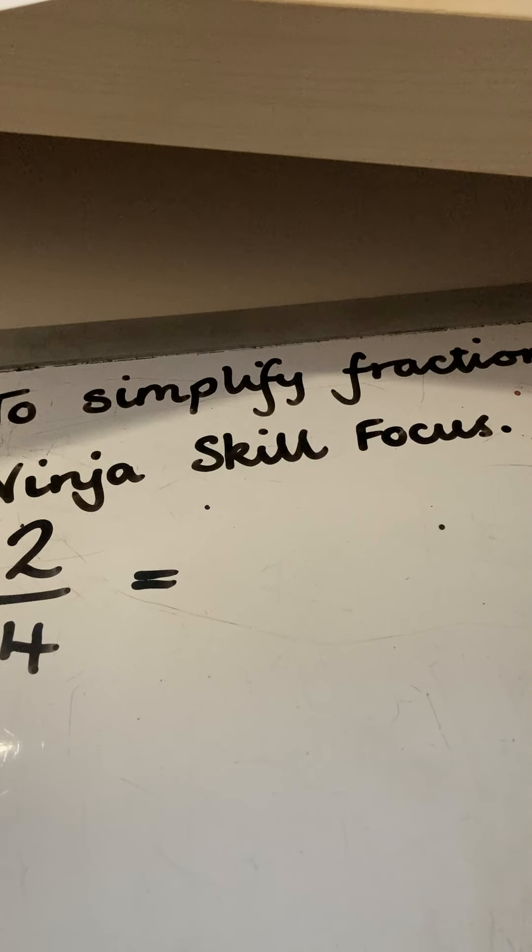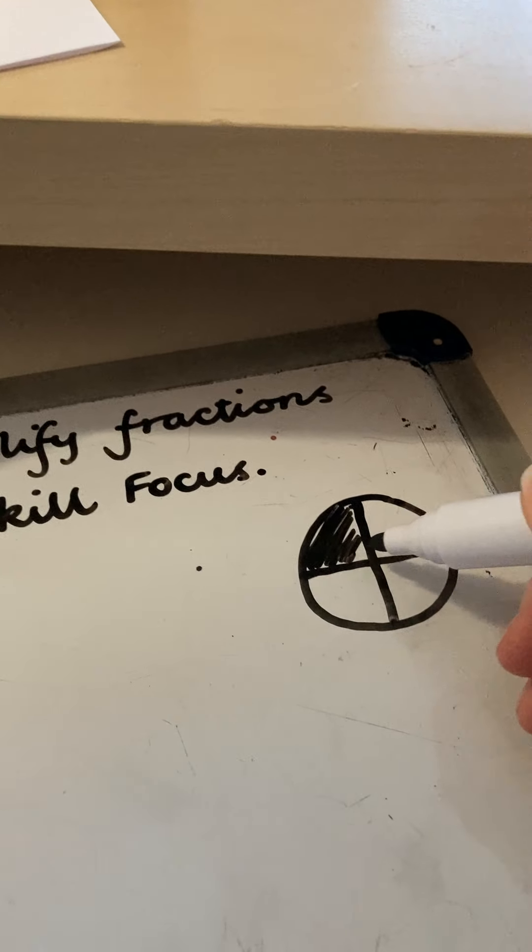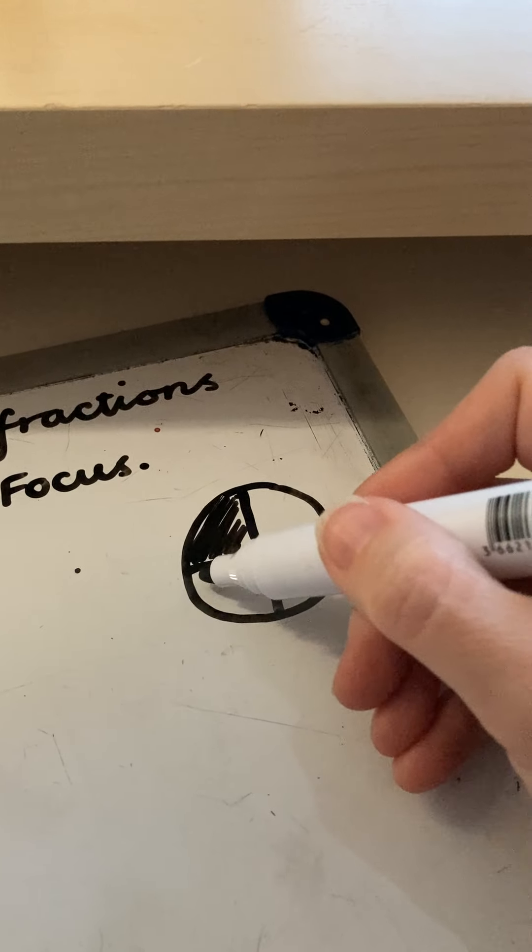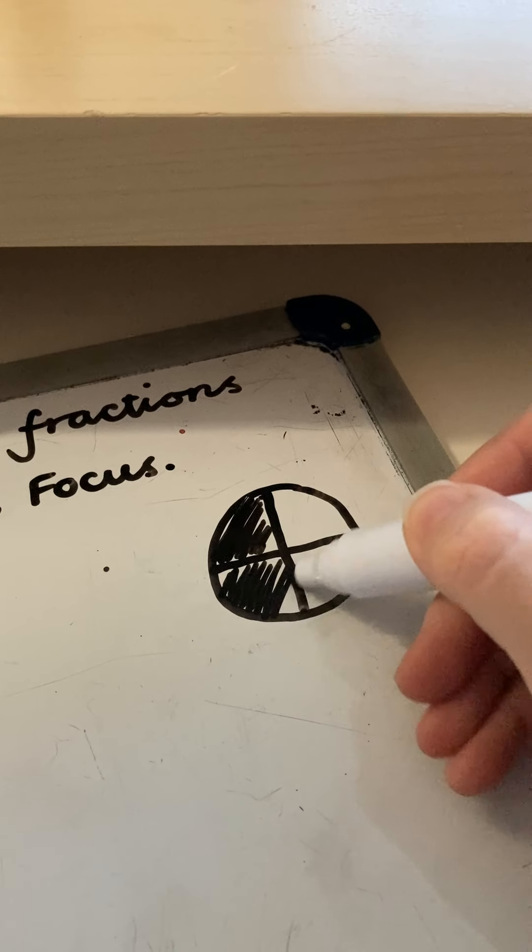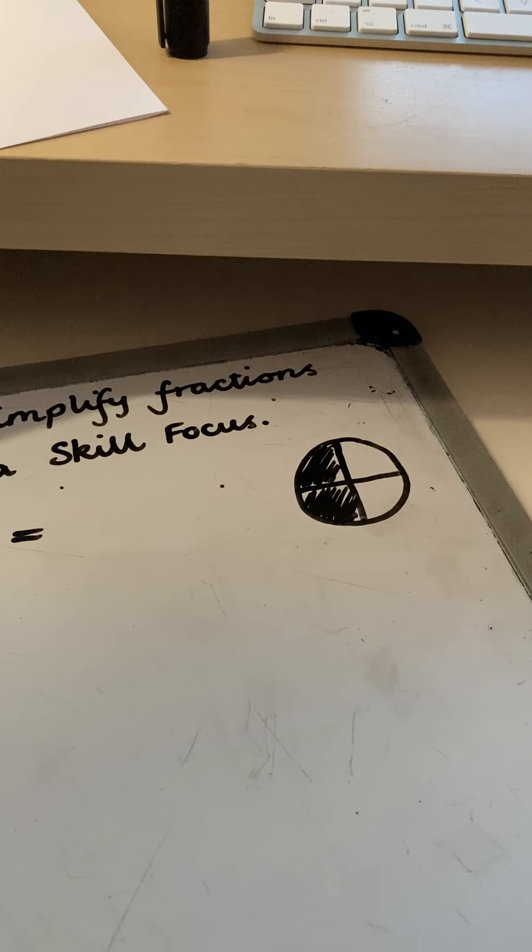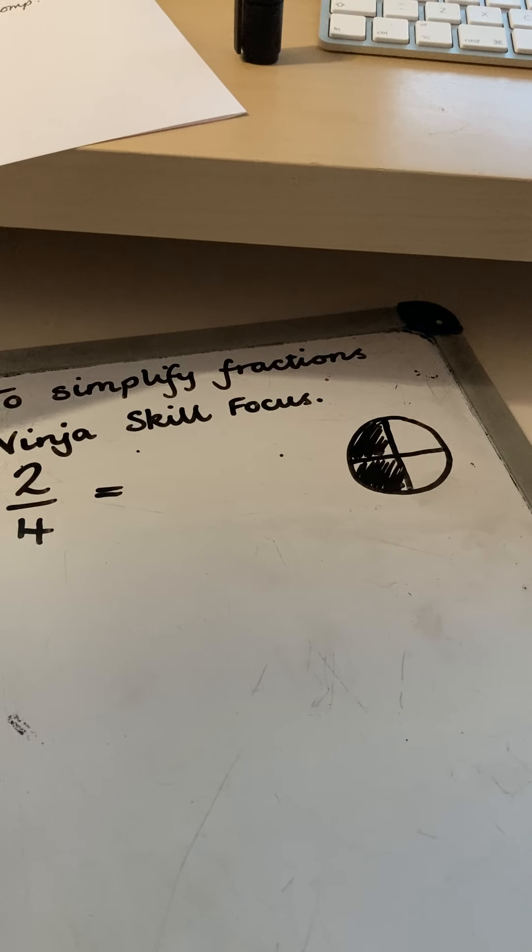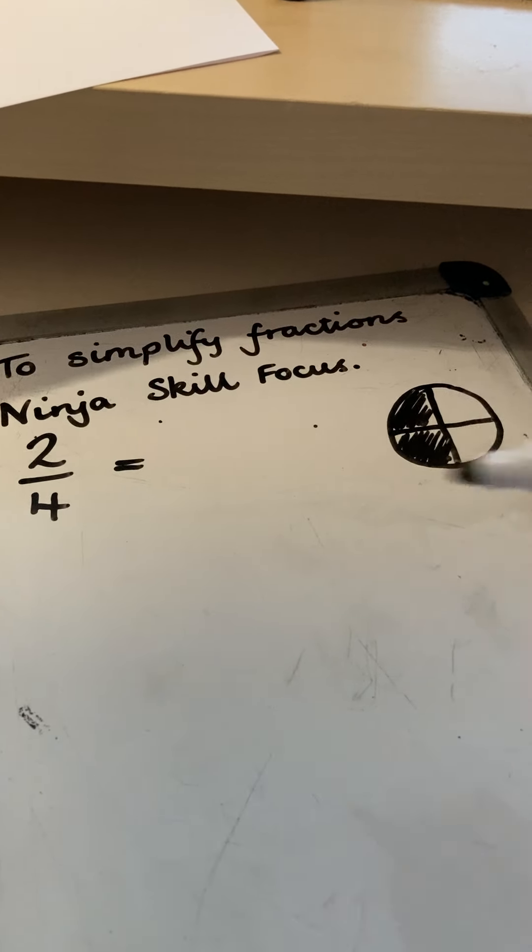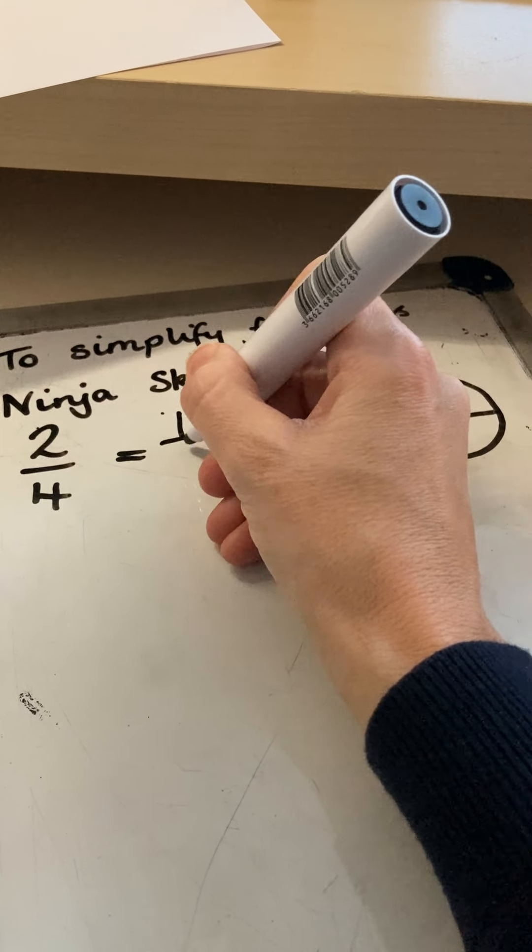I'm going to shade in two pieces. Now you can see that when I shade in two, you can see really clearly half of my shape has been shaded in. So I can write in half.